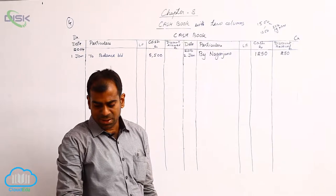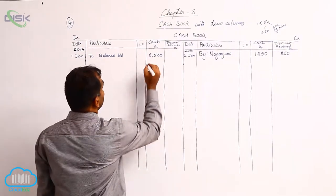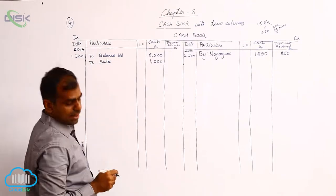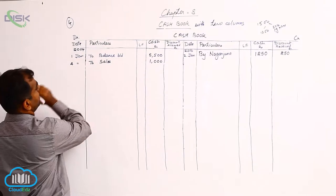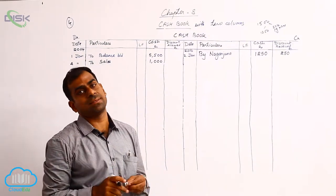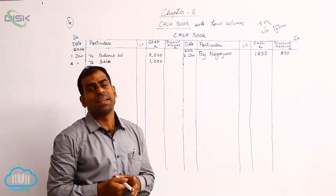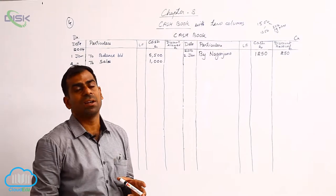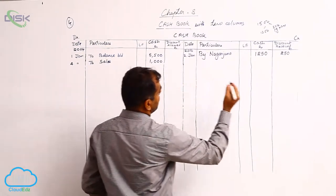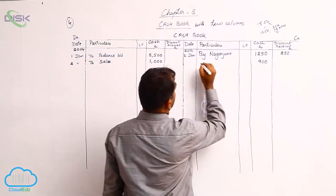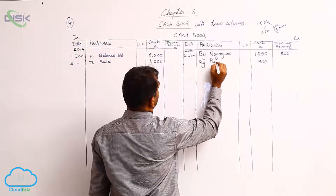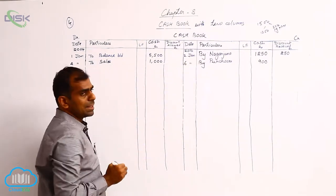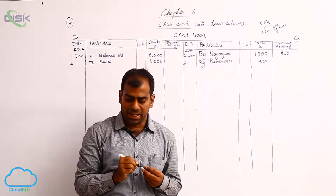On 4th January, cash sales — you are receiving cash of 1000, so enter it on the debit side with the reason 'sales'. On 6th January, cash purchases means purchase of goods for cash. You have 900 going out, so go to the credit side and enter 900 in the cash column with the reason 'purchases', date being 6th January.